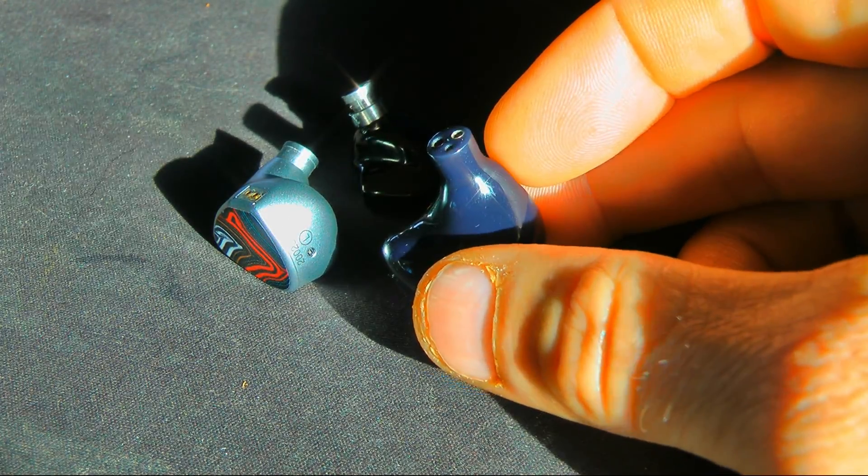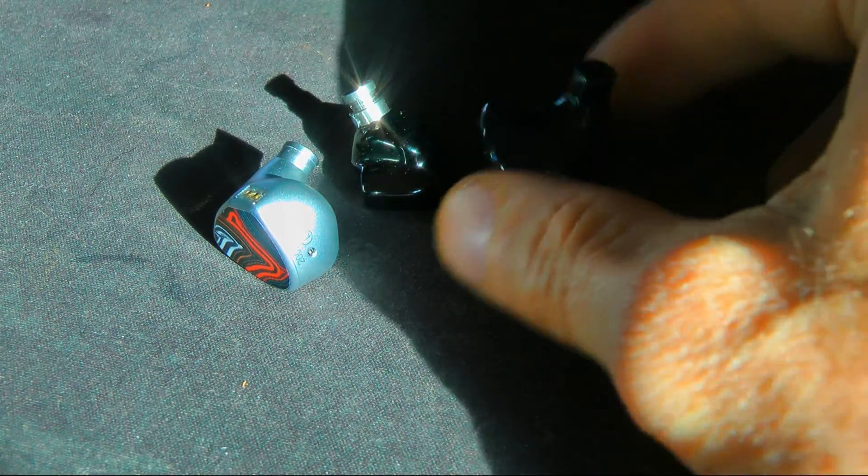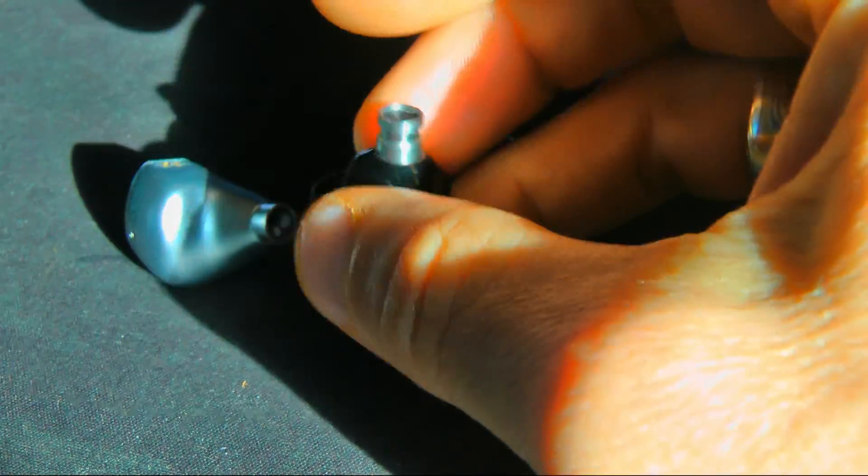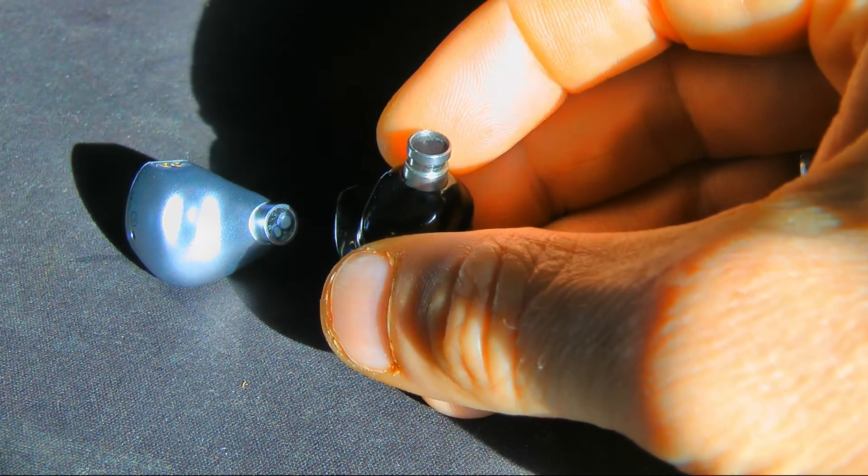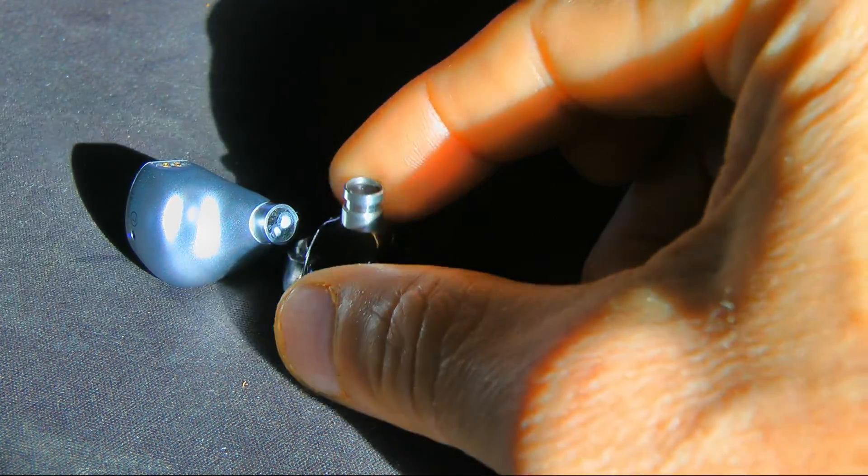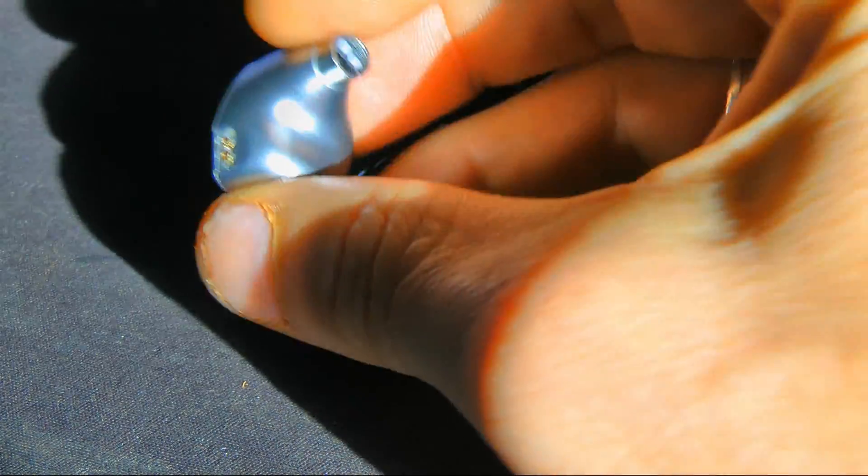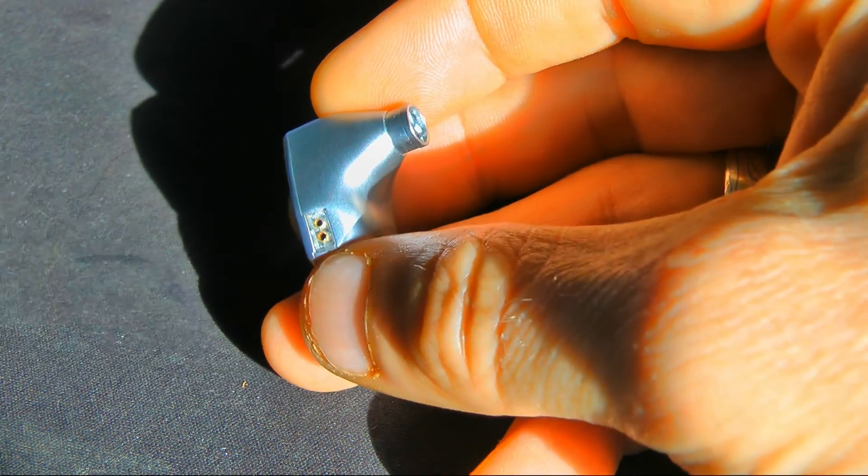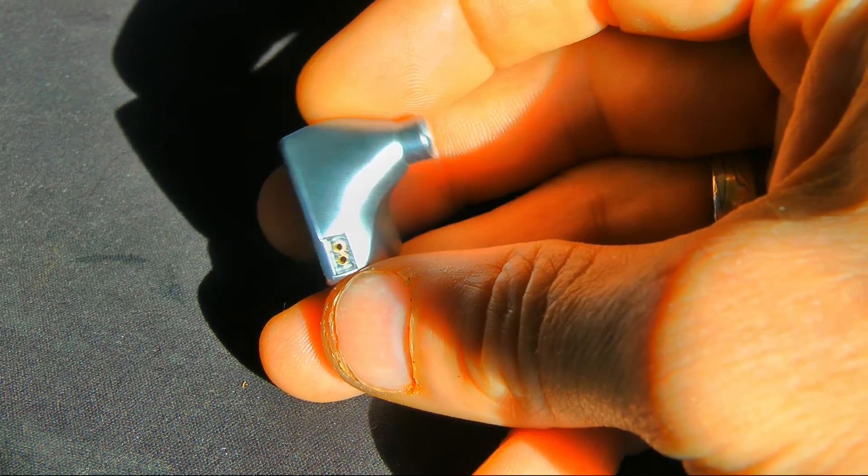So with the RSV, this is going to be filling most of your ear canal and going fairly deep. With the Dark Magician, it's going to be filling sort of a medium point of your ear canal and going, say, medium deep.